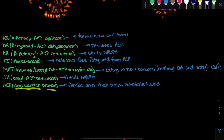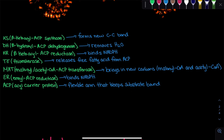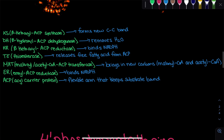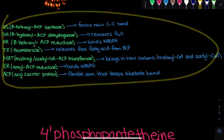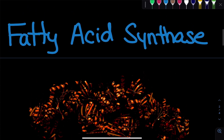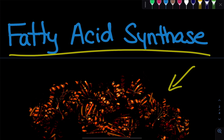The ACP — acyl carrier protein — is essentially a flexible arm that keeps the substrate bound. It binds to the substrate and acts as an arm that moves the substrate from one domain to another. These are all the domains found on fatty acid synthase.